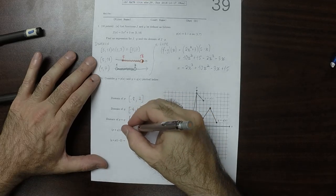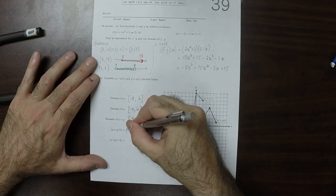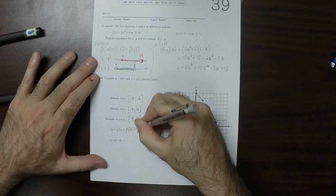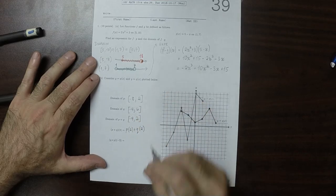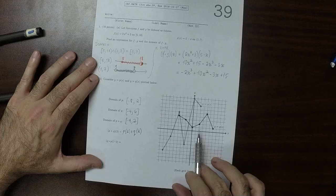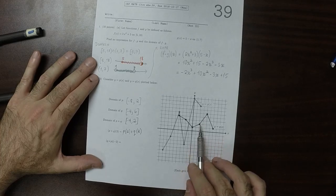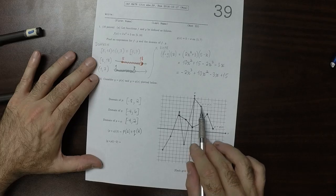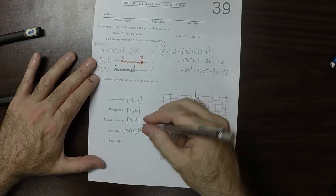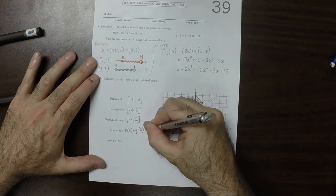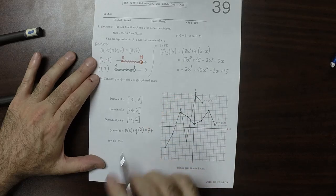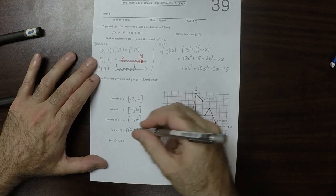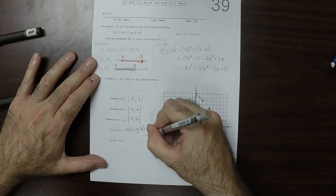So now p plus q evaluated at 2, that would be p evaluated at 2 plus q evaluated at 2. So p evaluated at 2 is 7, so that would be 7 plus now q evaluated at 2 is 2. So that would be 9.